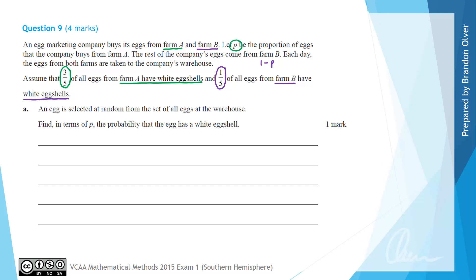For part A, an egg is selected at random from the set of all eggs at the warehouse, and we want to find, in terms of P, the probability that the egg has a white egg shell.